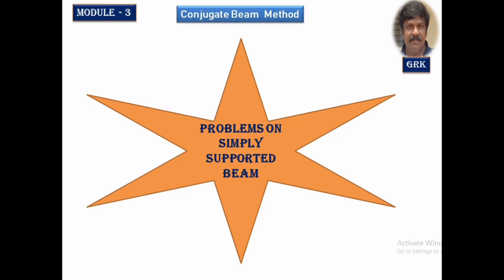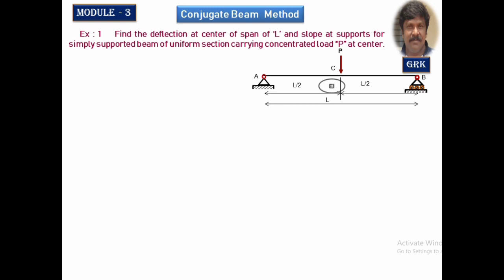Let me start with a simple example where we are going to get the derivation for the standard cases. This is the standard case where a simply supported beam has been loaded with a point load P or W at the center. Let us try to find out the slope at the supports and the deflection at the center.